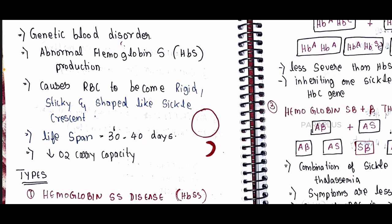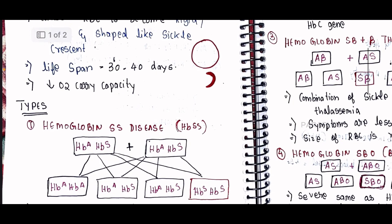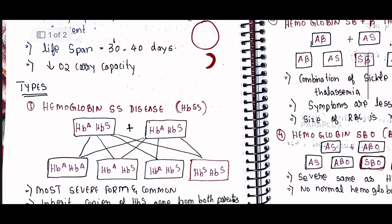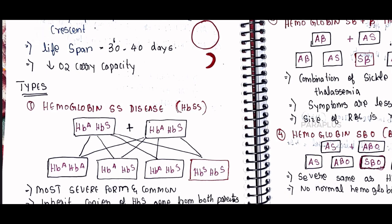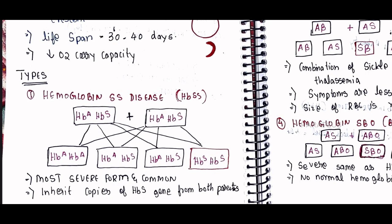Therefore, the oxygen carrying capacity of the blood is very low. Because the sickle-shaped RBCs are not proper in structure, they cannot carry oxygen normally. In C-shaped cells, only about 10% of normal oxygen is carried. This makes the patient's condition very serious and they may require blood transfusions.